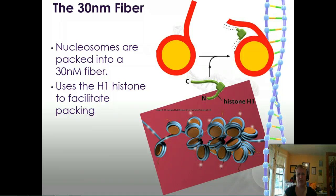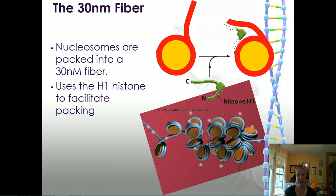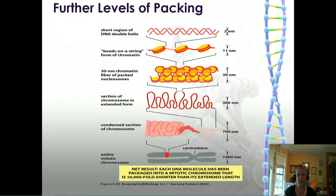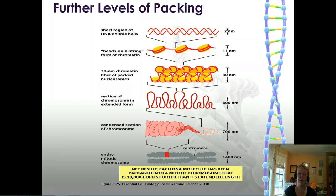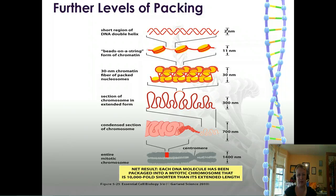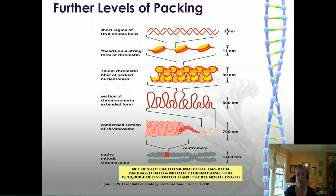We then move into the 30 nanometer fiber, where H1 comes into play, packaging the nucleosomes into a tighter fiber. After this come the 300 nanometer fiber, the 700 nanometer fiber, and eventually the entire mitotic chromosome. We aren't sure exactly how we get from the 30 nanometer fiber to the mitotic chromosome yet, but when fully condensed the chromosome is 10,000-fold shorter than its extended length. Chromosomes need to be opened and closed as needed — for reading or for tight condensation during mitosis so nothing gets broken.